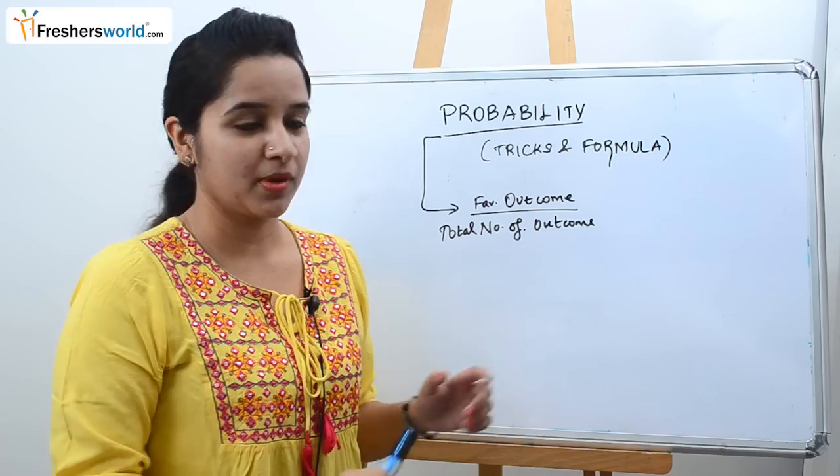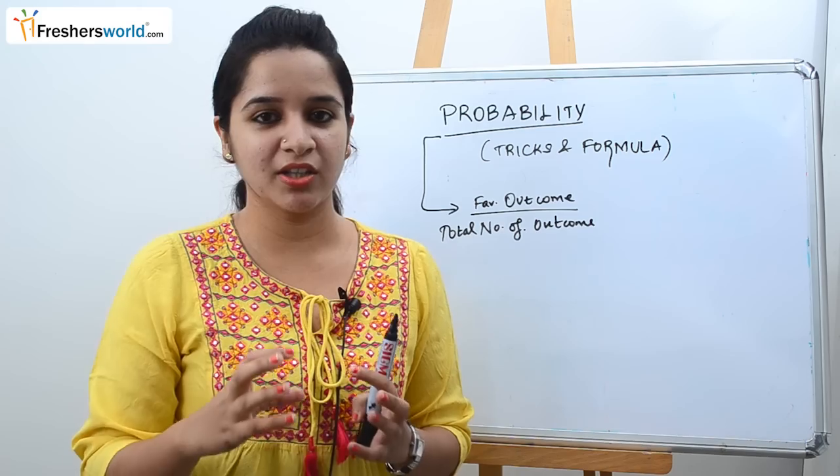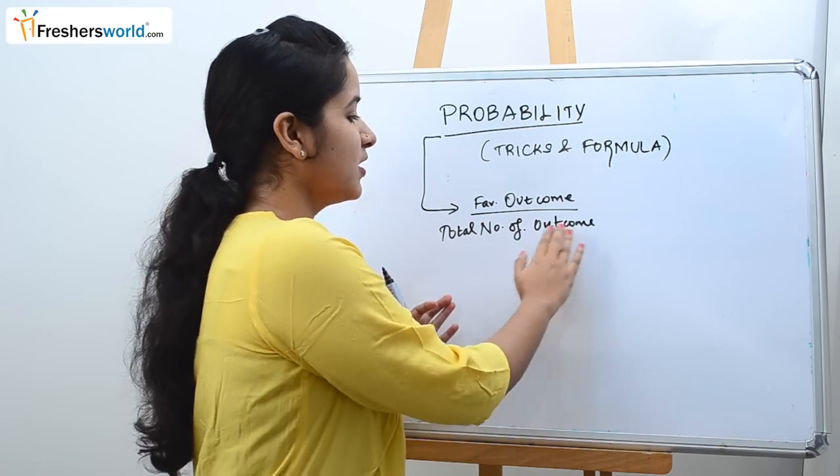So this is the basic formula. The numerator has the favorable outcome depending upon the question that you have been asked by the total number of outcomes.